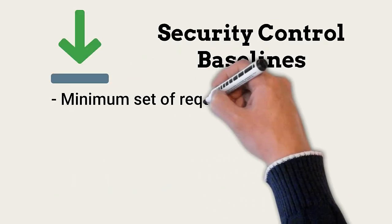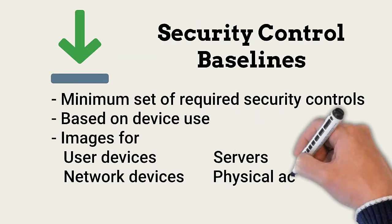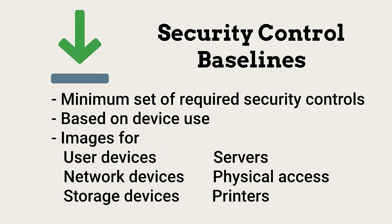Each device in an organization should initially be configured with an established security baseline. A security baseline is the minimum security controls required for a device operating within specific trust environments. Baselines are easily installed if images are used for initial configuration, and are adjusted based on ongoing risk assessments. Change management procedures may change baselines over time, which must then be added to device images or documented setup baselines.